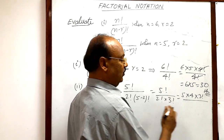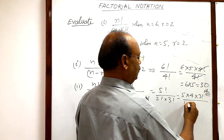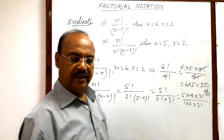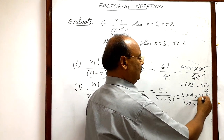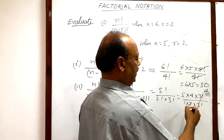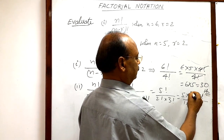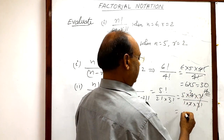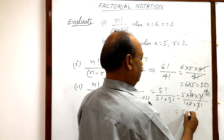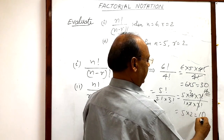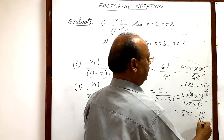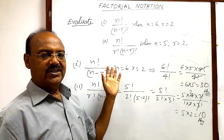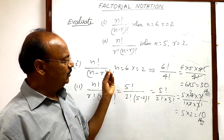The denominator is 2 factorial into 3 factorial. 2 factorial is 1 into 2. The 3 factorial cancels out, and we can cancel 2 from 4, giving 2. So finally we get 5 into 2, which equals 10. This is the answer. Questions are very simple — just do some more practice so that you have a good command over this topic.